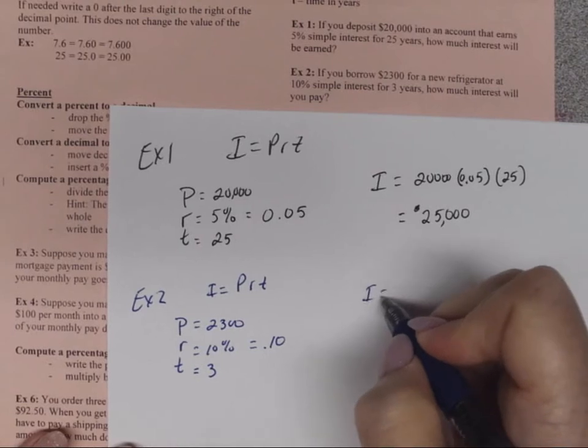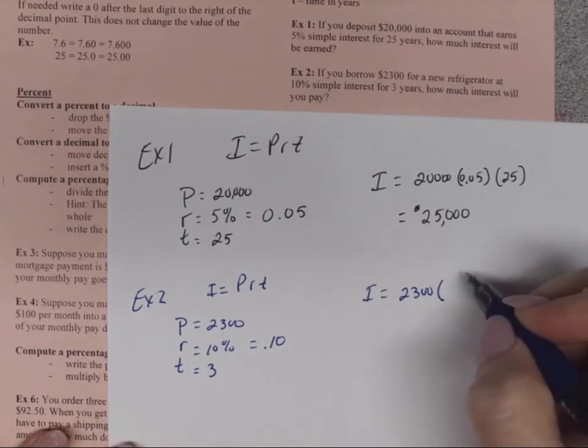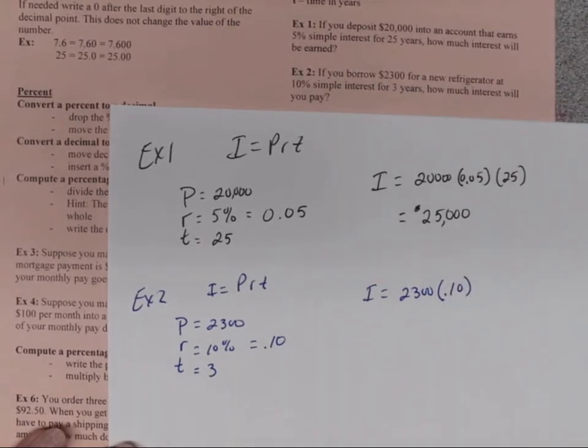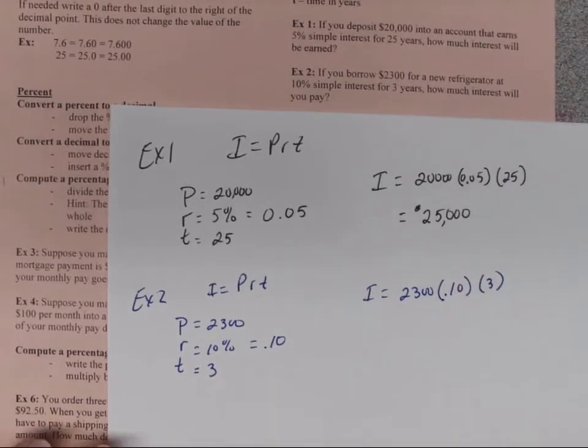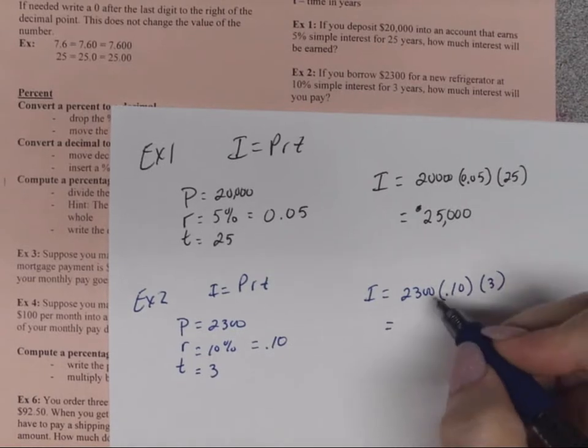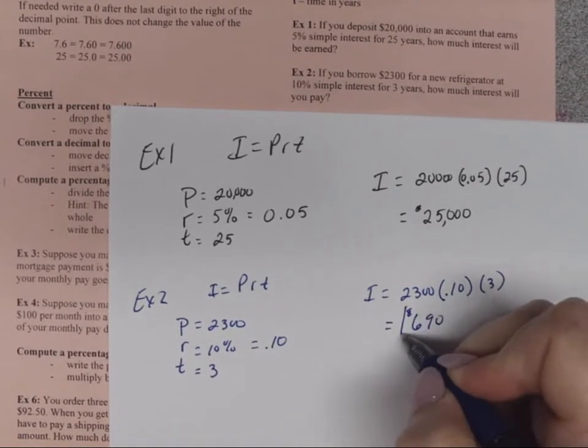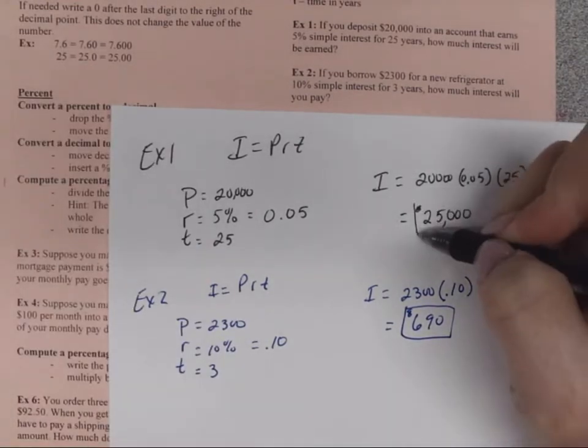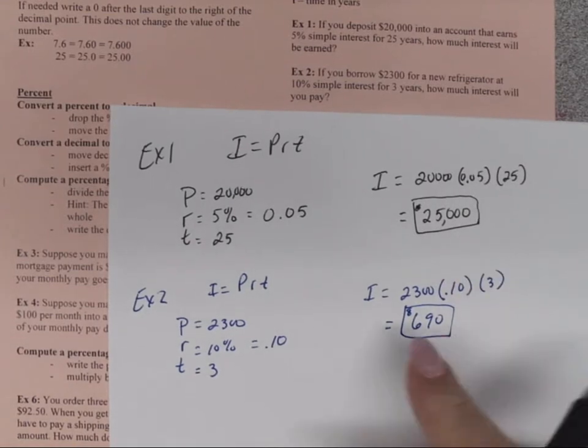So that means we have I is equal to 2,300 times 0.10, or just 0.1 will work, it doesn't matter either way you do that, and then times three. So I don't have to put the zero there if I don't want to. And we'll find that that interest is $690, so that's the amount of interest we will pay. This is the amount we earned, this is the amount we're paying.